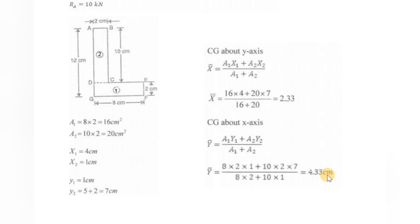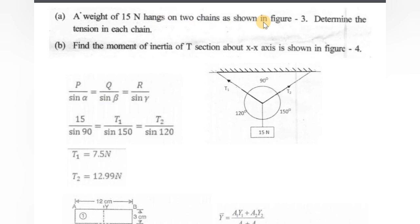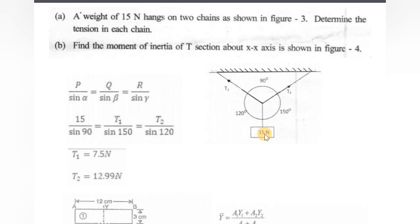Next problem: A weight of 15 N hangs on two chains as shown in the figure. Determine the tension in each chain. Applying Lami's Theorem: T1/sin(150°) = T2/sin(120°) = 15/sin(90°). From this relationship, we can find T1 and T2 by using the first-and-last and middle-and-last combinations.